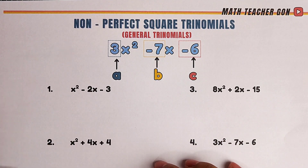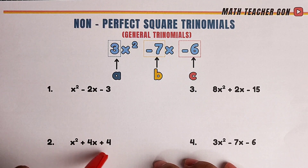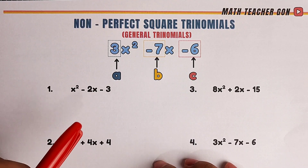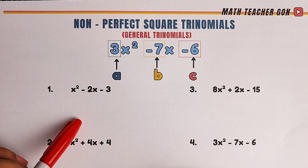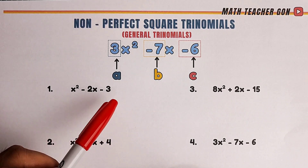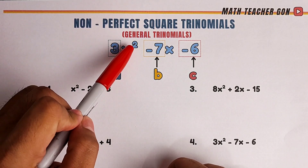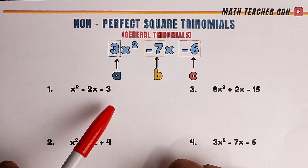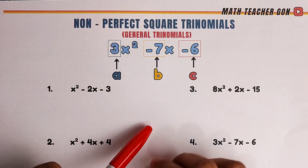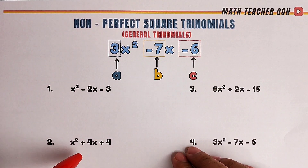Last time, we uploaded a video where we factored out perfect square trinomials. This time, our target are those trinomials that are not perfect squares. I have prepared an example for you to review the parts a little bit. We have 3x squared minus 7x minus 6. I have boxed the values of a, which is 3; b, which is negative 7; and c, which is negative 6.